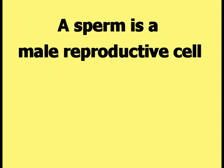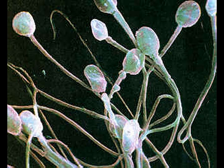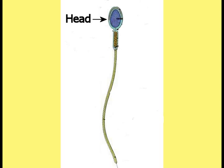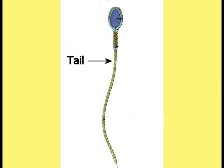A sperm is a male reproductive cell. This picture shows a group of real sperm. A sperm consists of a section called the head, a section behind the head called the body, and a section behind the body called the tail.